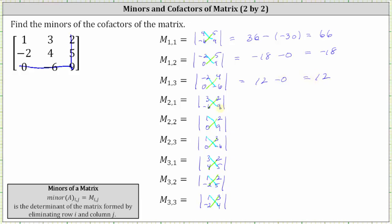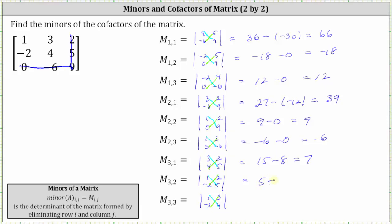For minor two comma one, we have 27 minus negative 12, which is equal to 27 plus 12 or 39. For minor two comma two, we have nine minus zero, which is nine. For minor two comma three, we have negative six minus zero, which is negative six. For minor three comma one, we have 15 minus eight, which is seven. For minor three comma two, we have five minus negative four, which simplifies to five plus four or nine. And finally, minor three comma three is four minus negative six, which simplifies to four plus six, which is 10.